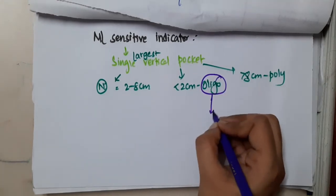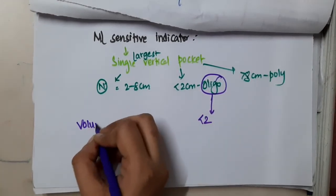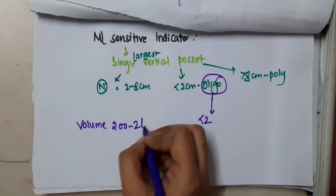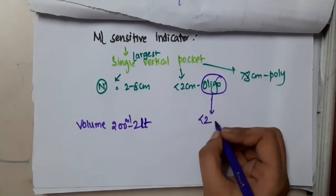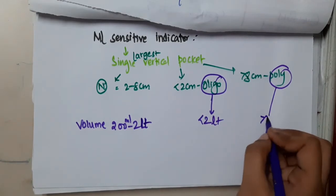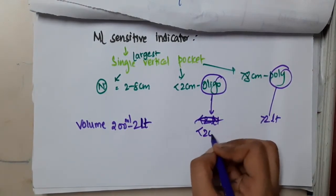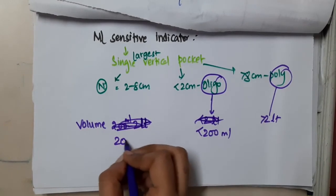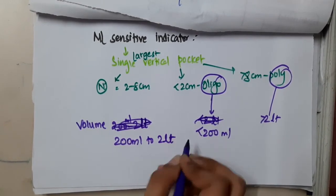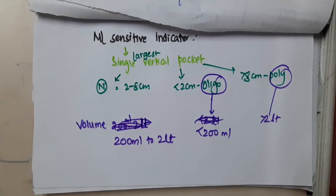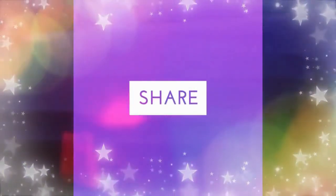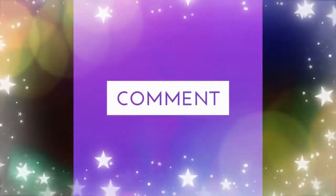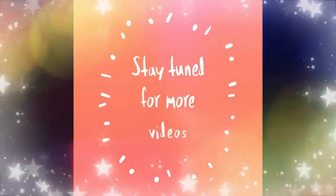Oligohydramnios occurs if the volume is less than 200 ml; normal is 200 ml to 2 liters; and polyhydramnios is more than 2 liters. We will learn some important points about oligohydramnios and polyhydramnios in the next class. Thank you for listening, please join us in the next class.